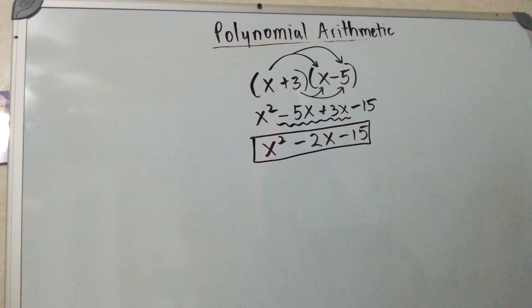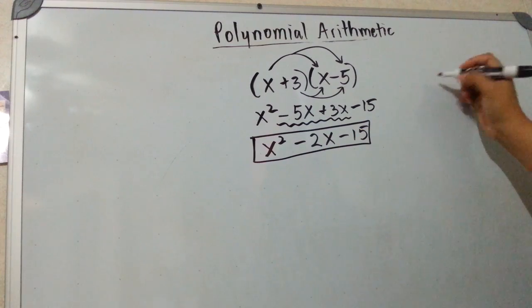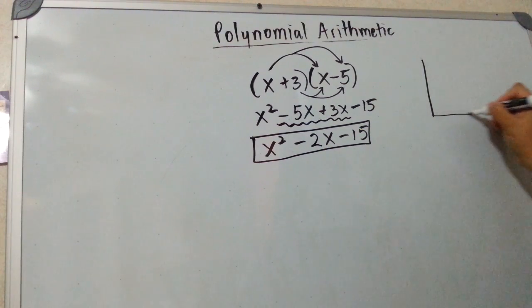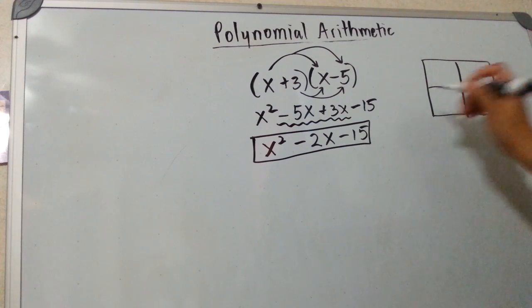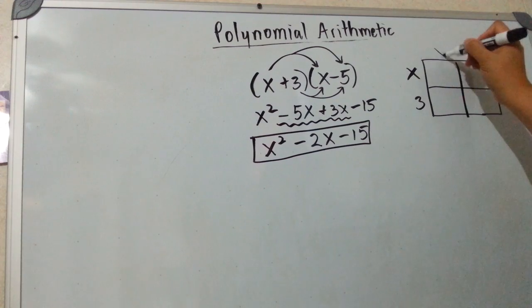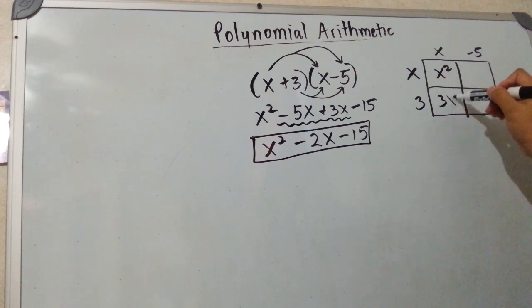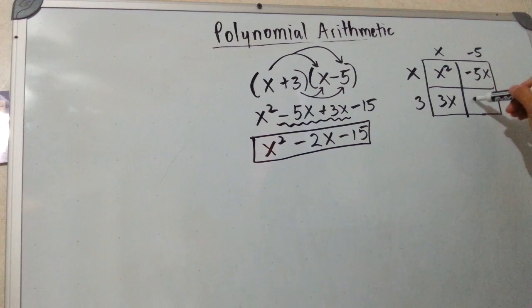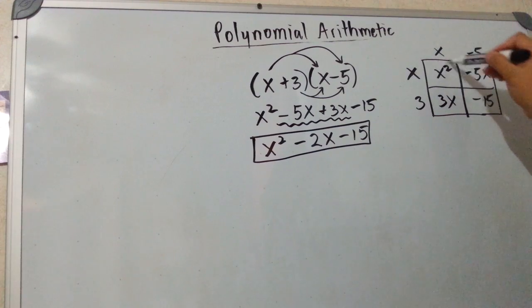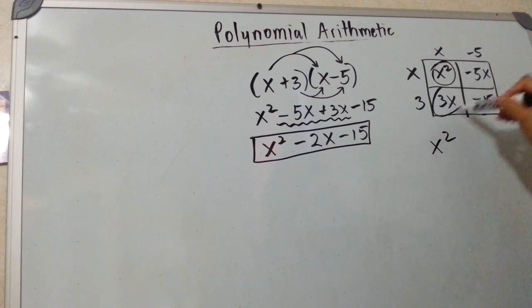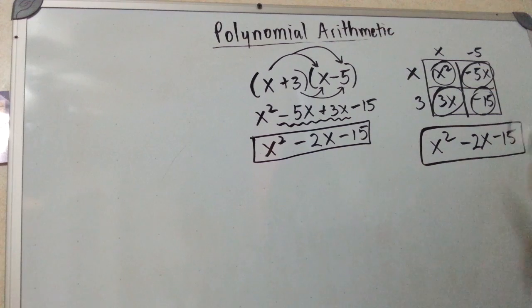There's another way of doing this. And the box method actually works better for trinomials and polynomials, bigger. For binomials, foiling is much better. But I did show you in class, so I'm going to show you again. This is binomial and binomial. Put x and 3 here and x and minus 5 here. And you just multiply x times x. 3 times x. x times negative 5. 3 times negative 5. And then you collect your like terms. We have an x squared. We have this one and this one. They're like terms. And there you get the same answer.